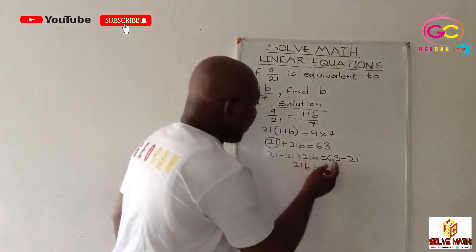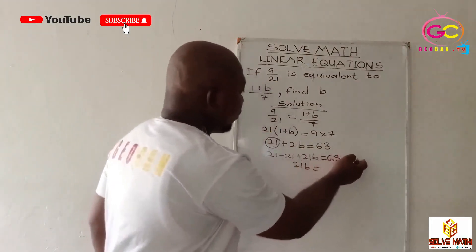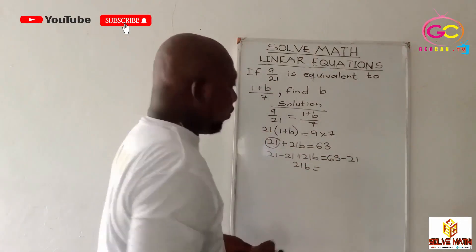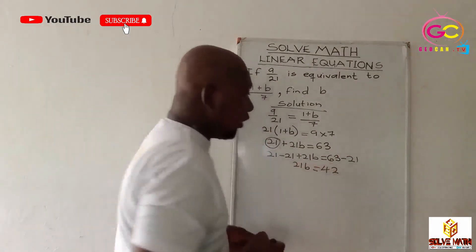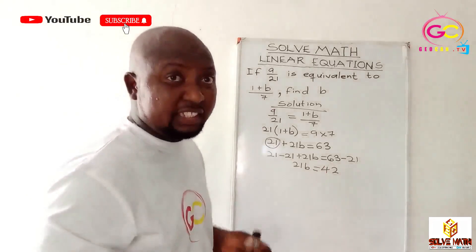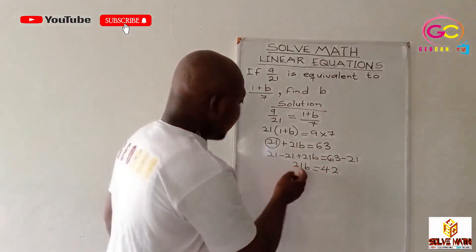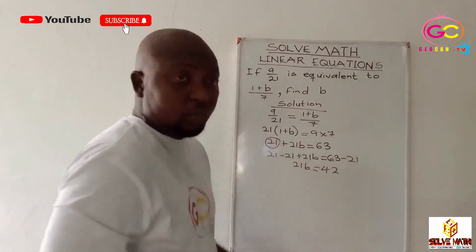Now you have your 21B. It's equal to now 63 minus what? 21. It will give you what? It will give you 42. This is easy subtraction. Good. Now you have 21B is equal to 42.